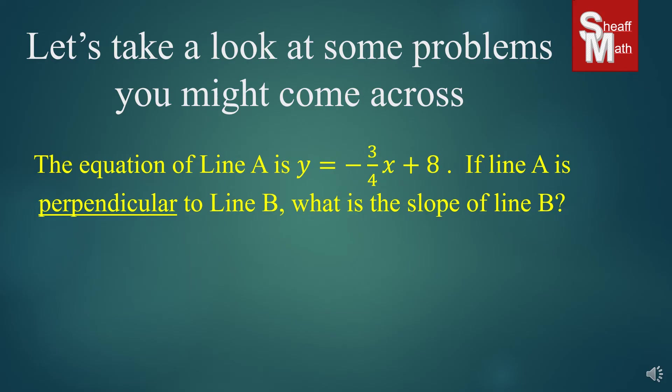This next one is a little more difficult. The equation of line A is y equals negative 3/4 x plus 8. If line A is perpendicular to line B, what is the slope of line B? All we have to do is find the opposite reciprocal of the slope. When it's in slope-intercept form, the number in front of x — the m — is our slope. So negative 3/4 is our slope, and the opposite reciprocal is positive 4/3.